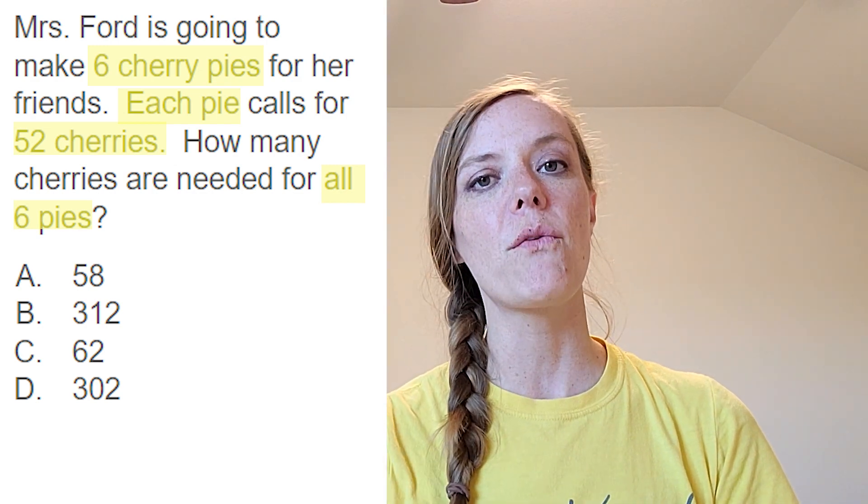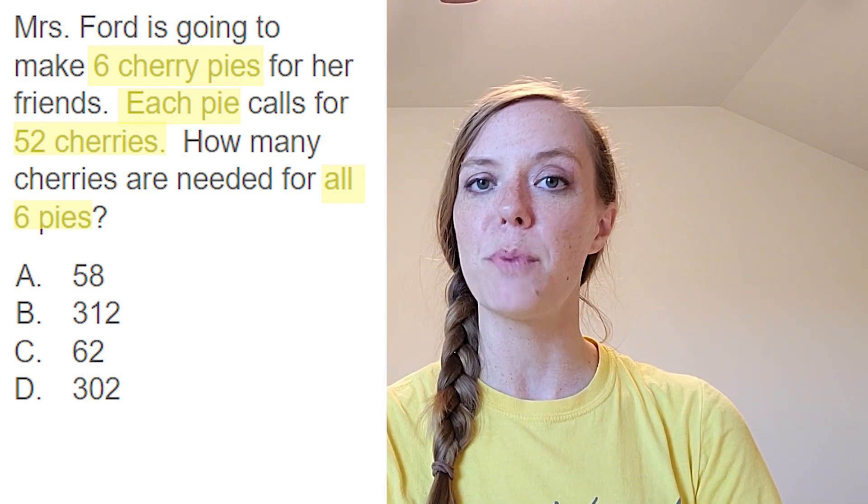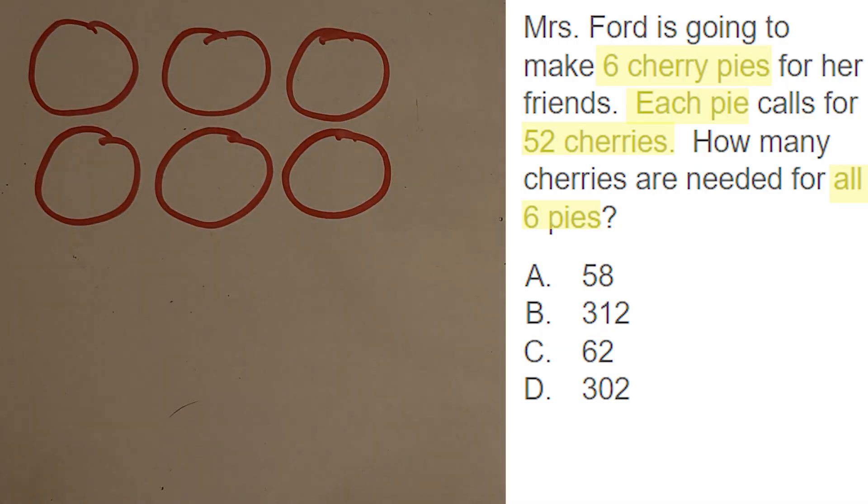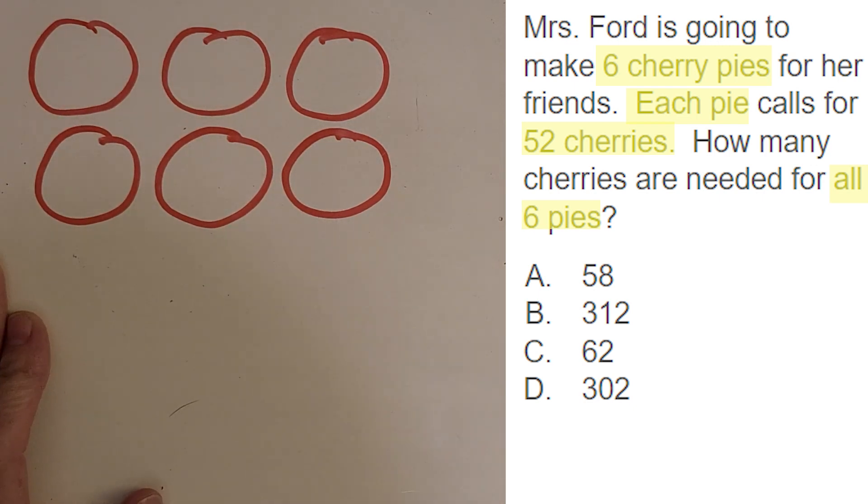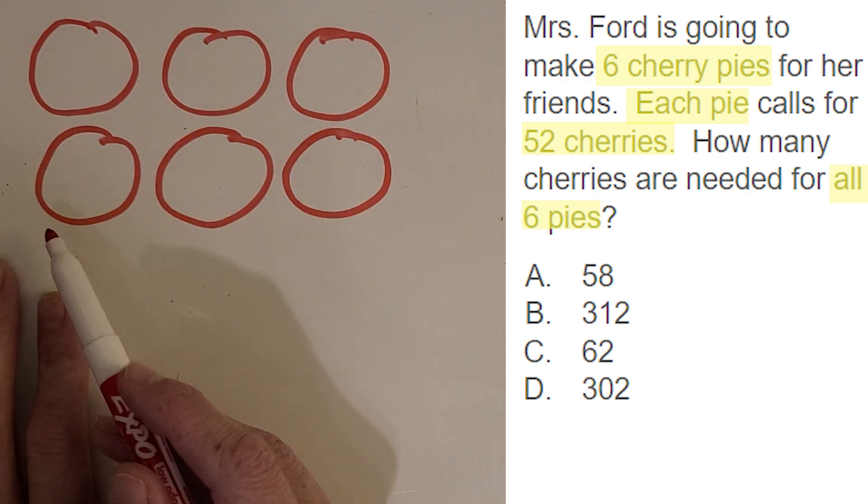So let's move over to the whiteboard, though, before we really decide, and we can solve this problem. So another great strategy is to, we read it twice and we have a pretty good idea of what it looks like. So now I like to draw it really fast.